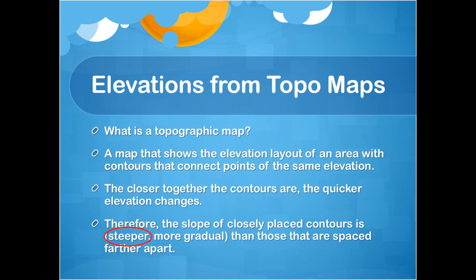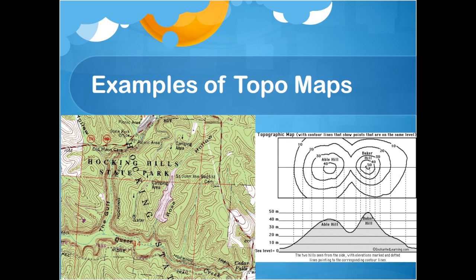On the left side we have a section of a USGS map for the Hocking Hill State Park region in Ohio. The contours are labeled every 100 feet, and each contour represents a 20-foot change in elevation. We can tell that the region on the right side of the map is much steeper than the region on the left. If we wanted a profile view, we could plot the elevations based on the horizontal spacing between contours. The contours on a topo map give us an idea of elevations, slopes, and water flow. Contours point upstream in valleys and point down ridges.